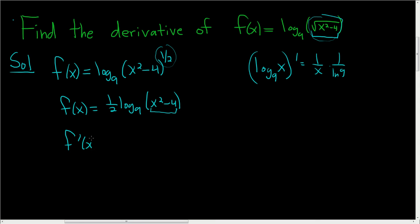So f prime of x, this is 1 half, 1 over x squared minus 4, just whatever's there, you write it. And then 1 over ln 9, and now we use the chain rule. Now we multiply by the derivative of x squared minus 4, which is 2x.